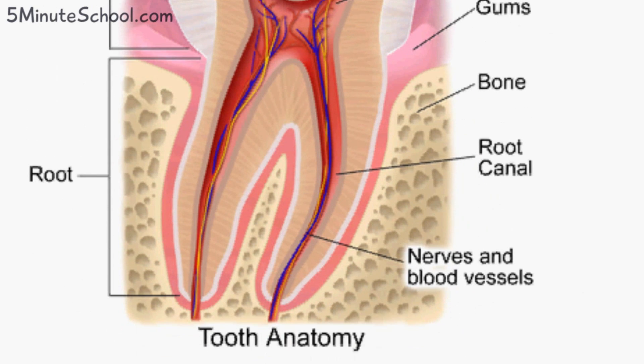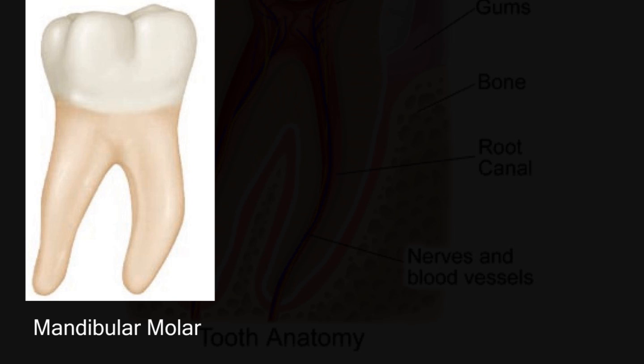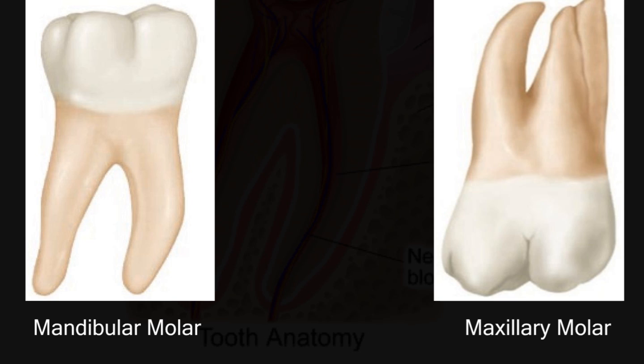Here we have the roots. The frontal teeth have one root. The molars, which are the posterior teeth, have either two or three roots depending on which jaw they're in. Molars of the lower jaw, or the mandible, have two roots, and molars of the upper jaw, the maxilla, have three roots.